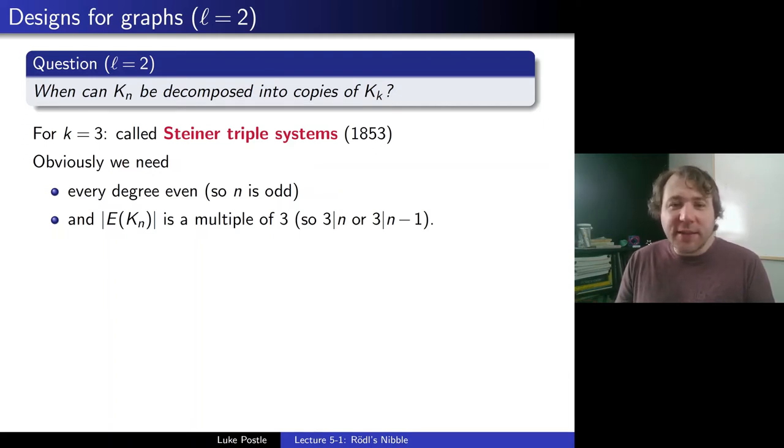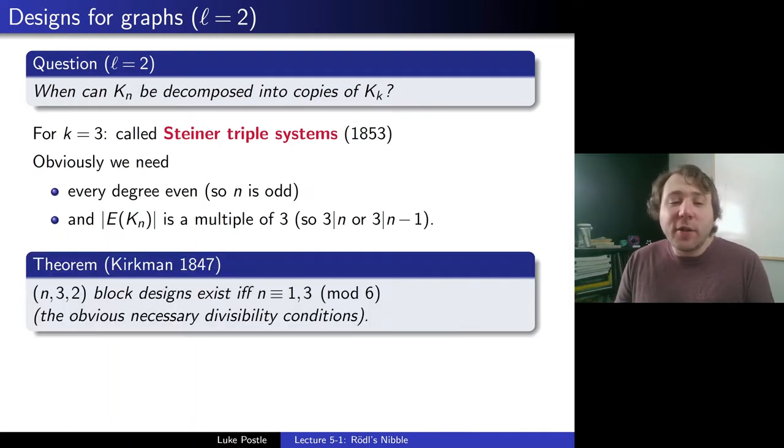So given this, you have these necessary divisibility conditions on n to be able to perfectly divide K_n. And indeed, Kirkman in 1847 showed that (n,3,2) block designs exist if and only if n is congruent to 1 or 3 mod 6, the obvious necessary divisibility conditions.